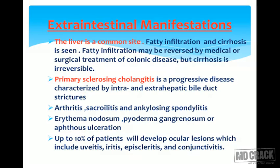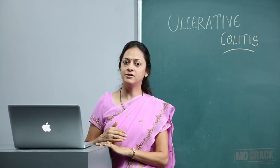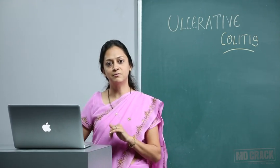Extra-intestinal manifestations: the liver is a common site — fatty infiltration and cirrhosis may occur. Fatty infiltration may be reversed by medical or surgical treatment of colonic disease, but cirrhosis is irreversible. Primary sclerosing cholangitis is a progressive disease characterized by intra- and extra-hepatic bile duct strictures. Arthritis, sacroiliitis and ankylosing spondylitis may occur. Skin lesions include erythema nodosum, pyoderma gangrenosum, and aphthous ulceration. Up to 10% of patients develop ocular lesions including uveitis, iritis, episcleritis and conjunctivitis.